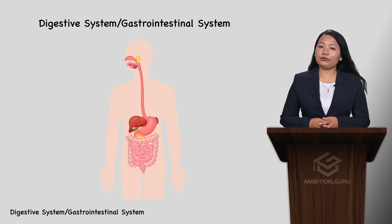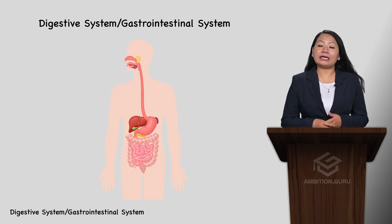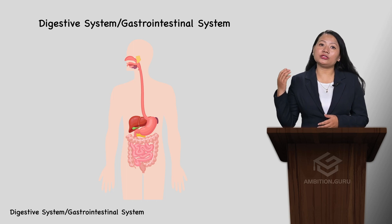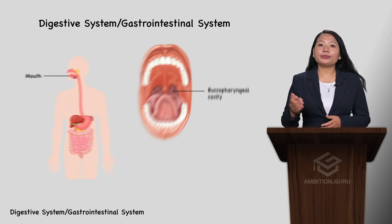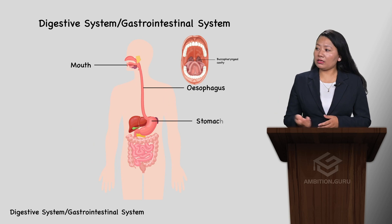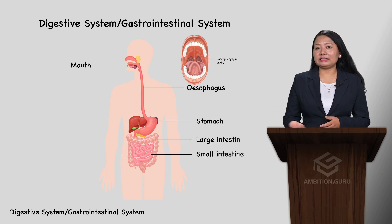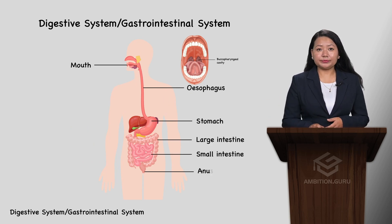The various parts of the alimentary canal consist of the mouth, bucopharyngeal cavity, oesophagus, stomach, small intestine, large intestine, and anus.